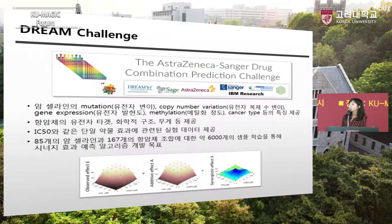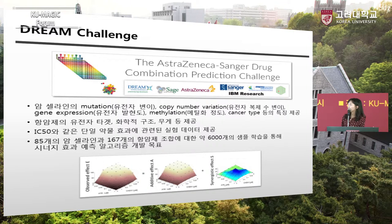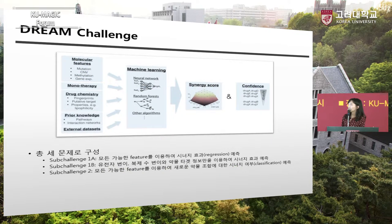이런 문제를 풀기 위해서 DREAM Challenge라는 국제 대회가 있는데, 이 대회의 목표는 어떤 환자에게 어떤 약물 조합이 가장 효과가 좋을 것인가를 예측하는 것입니다. 뮤테이션이나 카피 넘버 베리에이션, 드럭의 타겟 정보 등을 이용해서 기계학습 모델을 만드는 것을 목표로 하며 총 3문제로 구성되어 있었습니다.